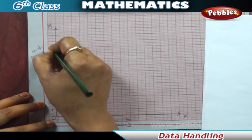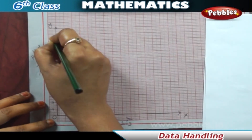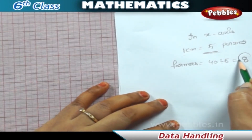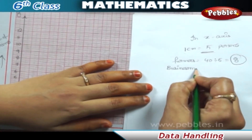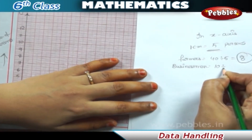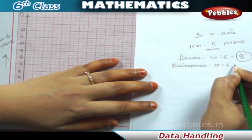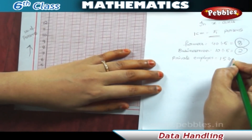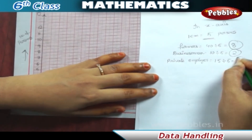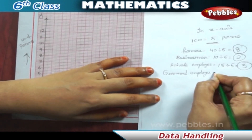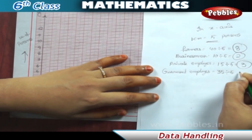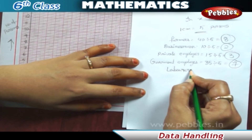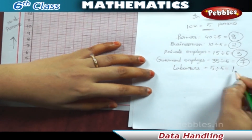Calculate the heights of the bars by dividing the frequencies by the scale value: farmers 40 ÷ 5 = 8 cm; businessmen 10 ÷ 5 = 2 cm; private employees 15 ÷ 5 = 3 cm; government employees 35 ÷ 5 = 7 cm; laborers 5 ÷ 5 = 1 cm.